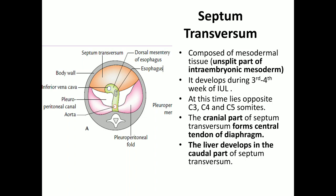The first component is the septum transversum. It forms the central tendon of the diaphragm and is composed of mesodermal tissue — specifically the unsplit part of the intraembryonic mesoderm, meaning the intraembryonic coelom does not extend into it. It develops during the third to fourth week of intrauterine life and lies at the level of C3, C4, C5, so it will be supplied by the C3-4-5 phrenic nerve. From the cranial part of the septum transversum, the central tendon of the diaphragm develops, and into the caudal part, the liver develops.